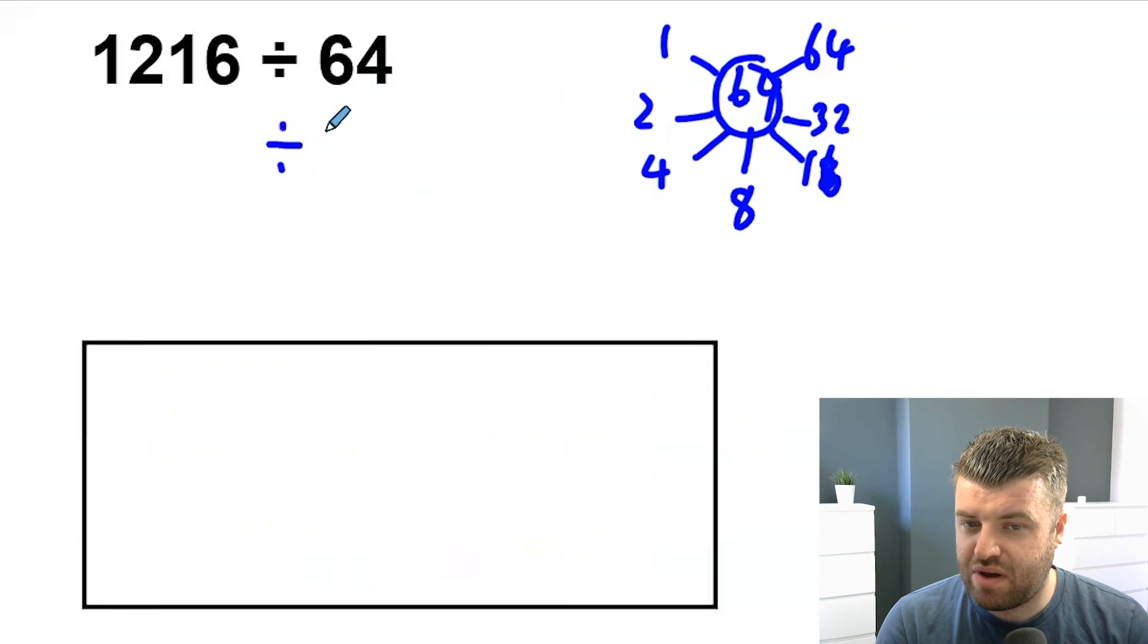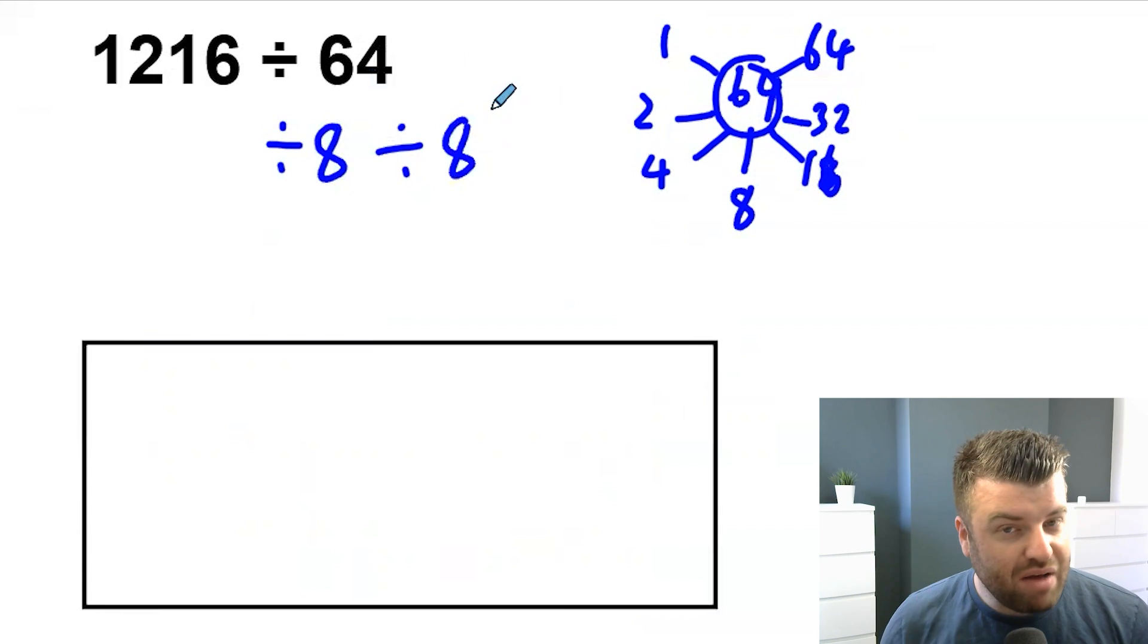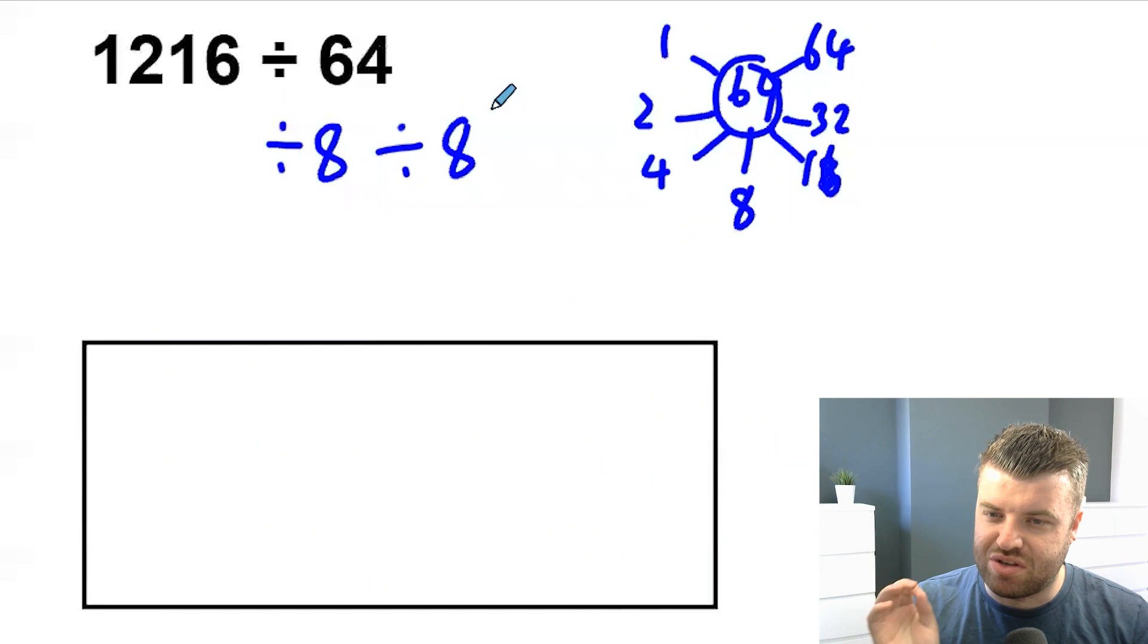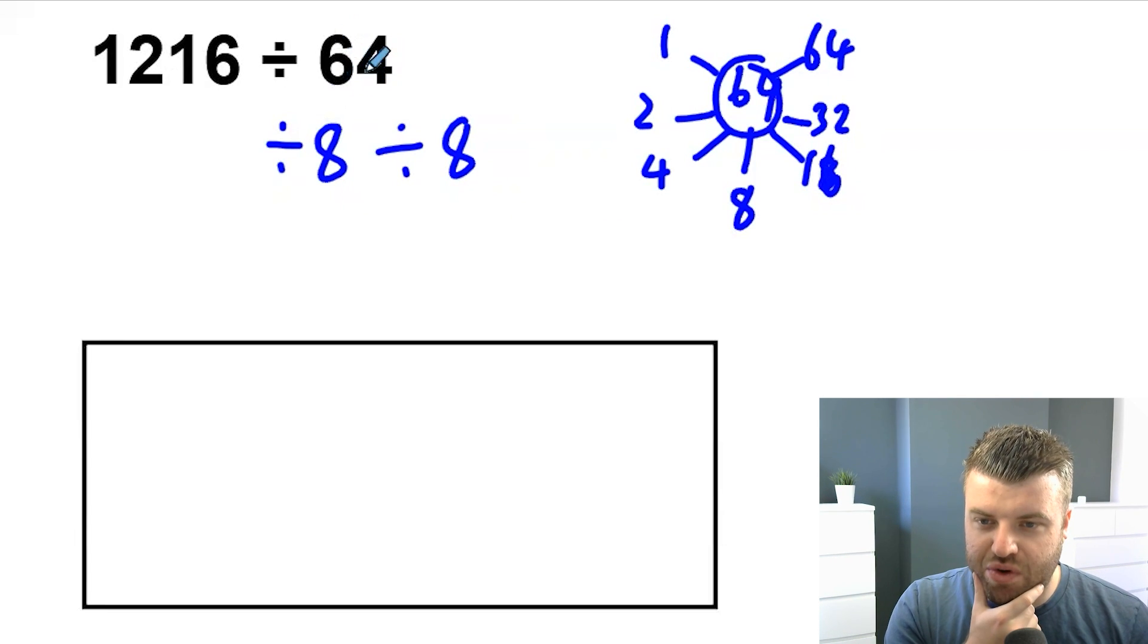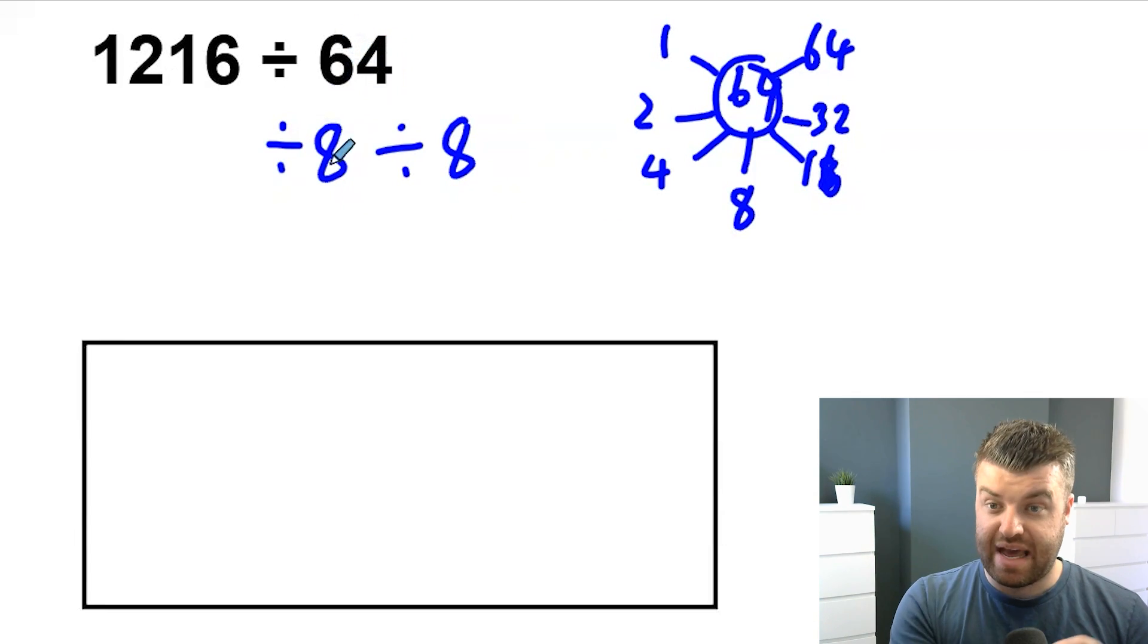We could divide by 8 and then divide by 8 again. Well, we already know how to do that. And we could get the answer quite quickly. But I want to show you something cool. There's no need to stop breaking up the numbers. Let me show you what I mean. We've got 64. We split it into divide by 8, divide by 8. We could actually go again, couldn't we? We could do 8 into divide by 4 and divide by 2.